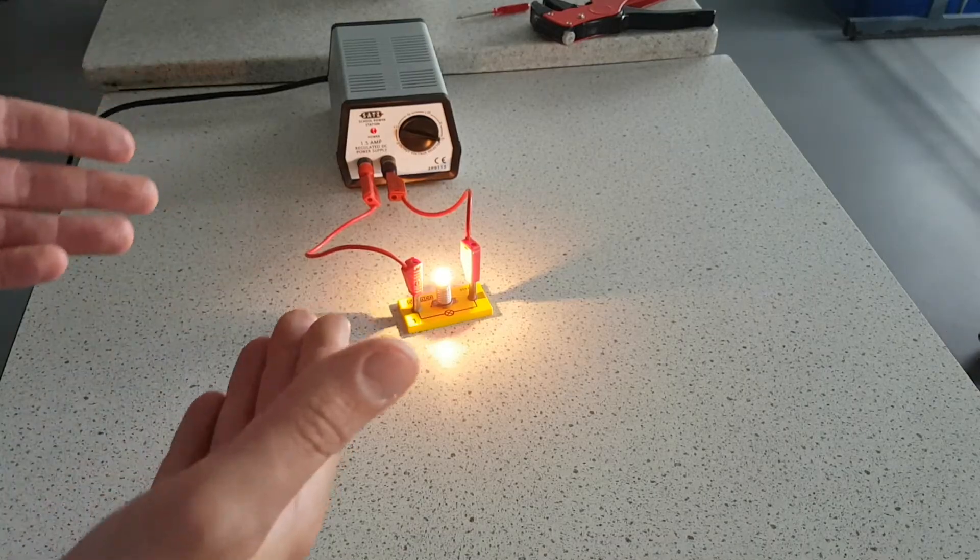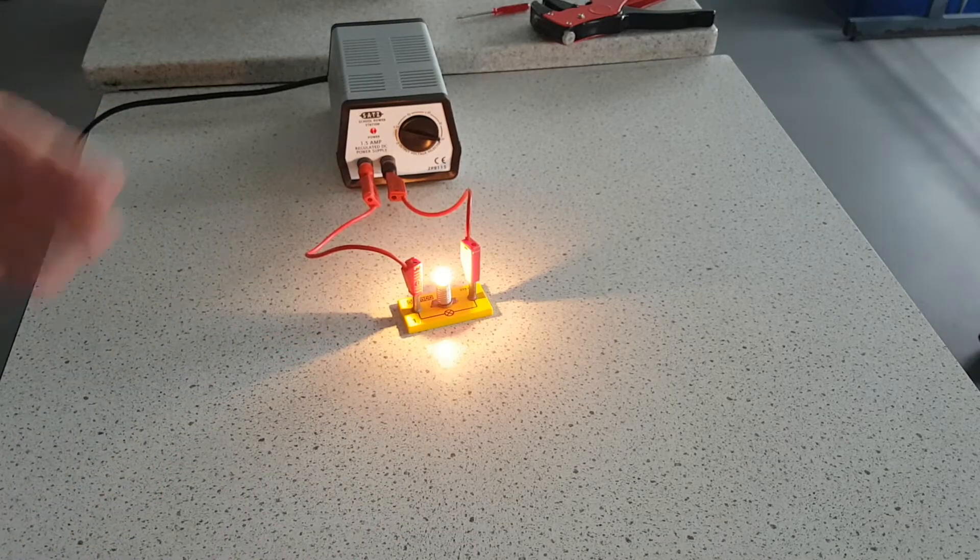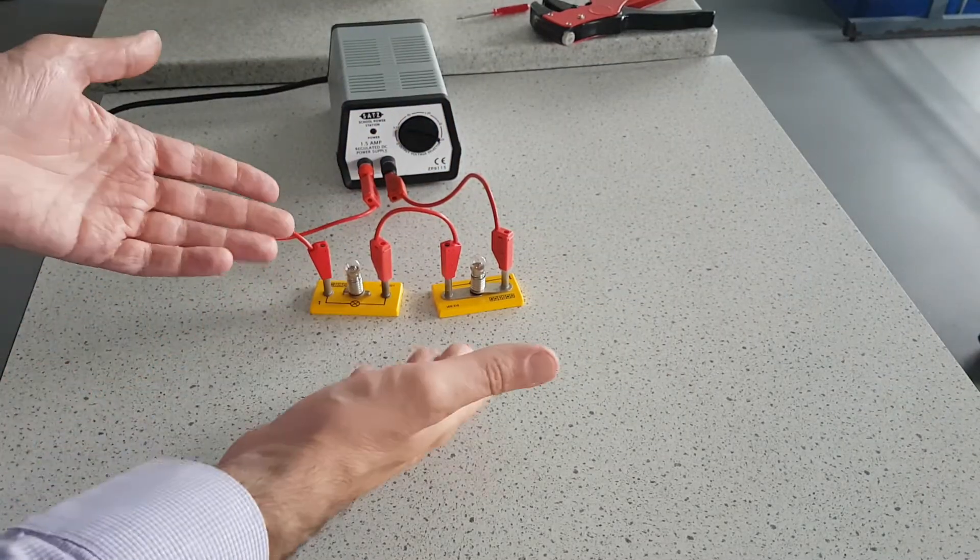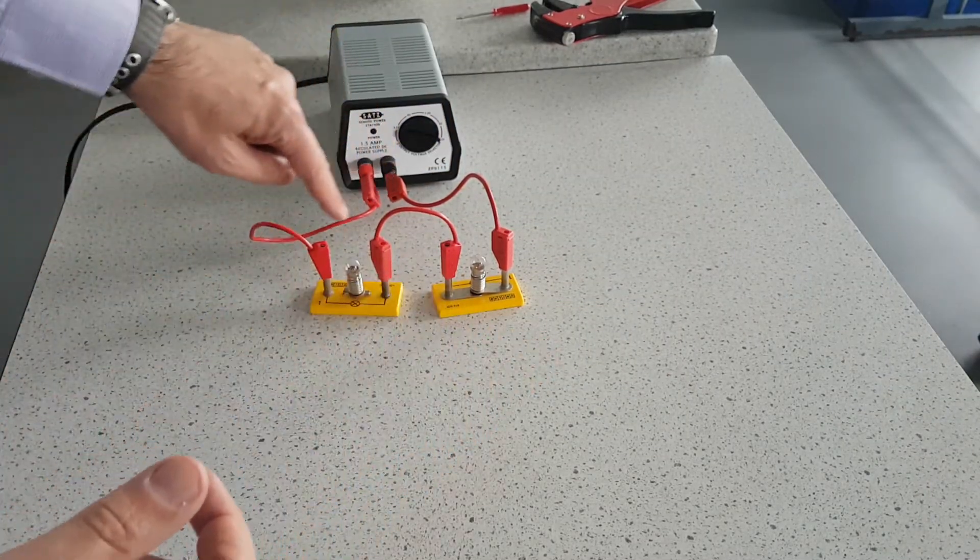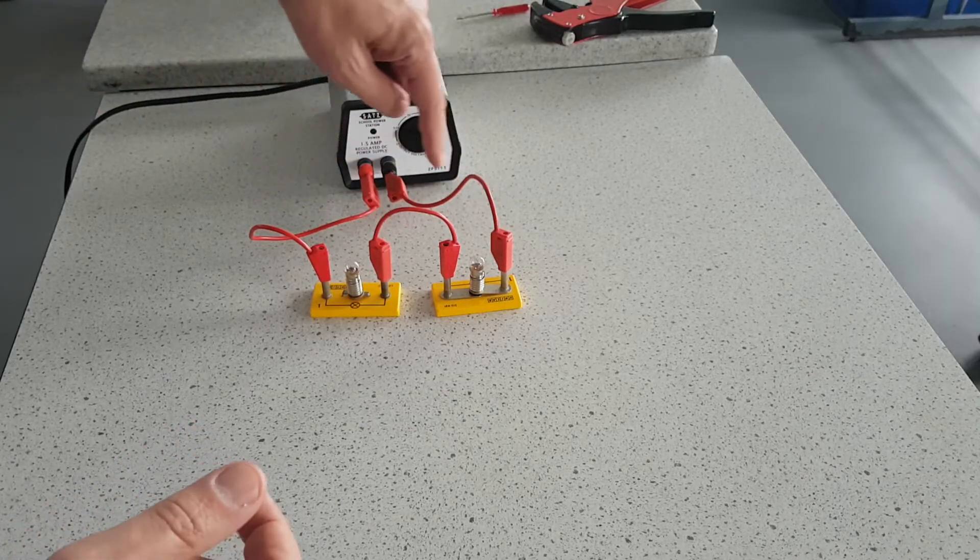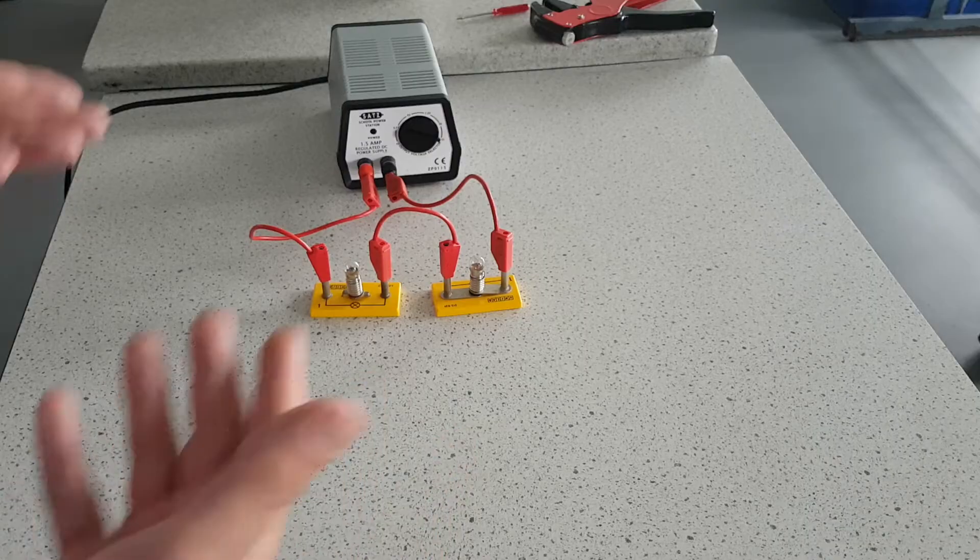Now then I'm going to put two bulbs in. Just have a think to yourself what's going to happen to the brightness if I put two bulbs in. Right so I've got two bulbs. It's still just going in one circle all the way around through this bulb, through that bulb and back to the battery again. Sorted. So what will happen to the brightness?